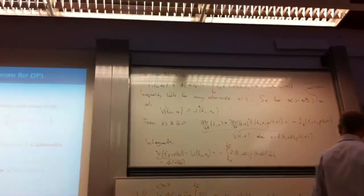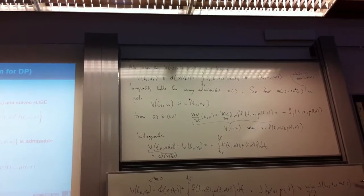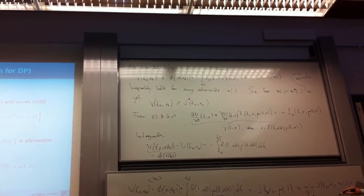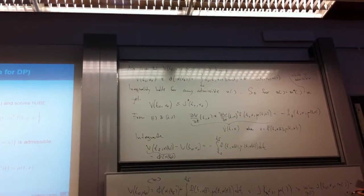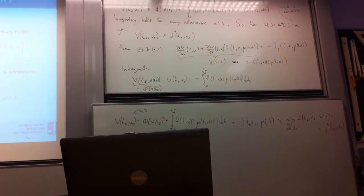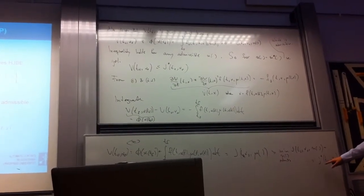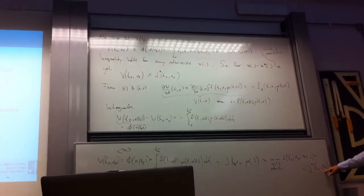Now, I actually minimize over all admissible, and then I have to get something that's smaller, and the definition of that is that that is equal to j star of t0, x0. So now I've proved that v(t0, x0) is greater than or equal to j star of t0, x0.